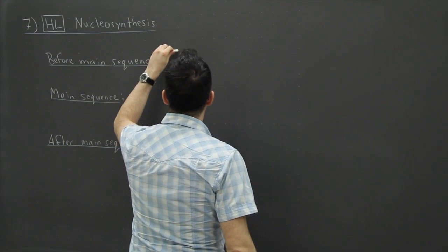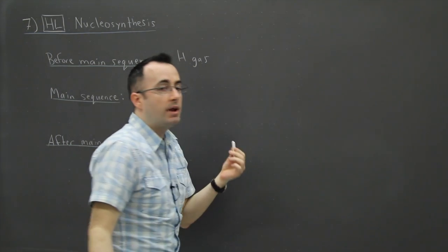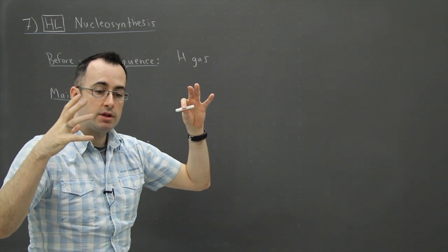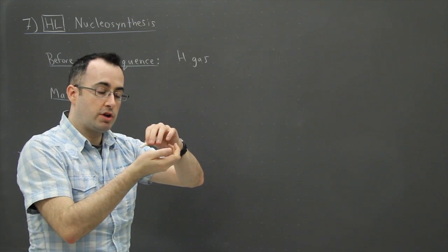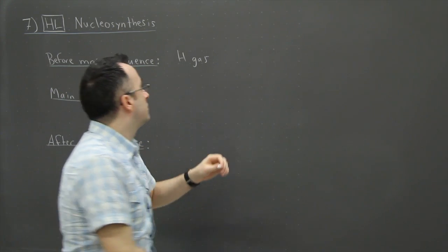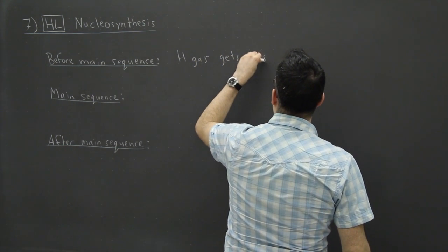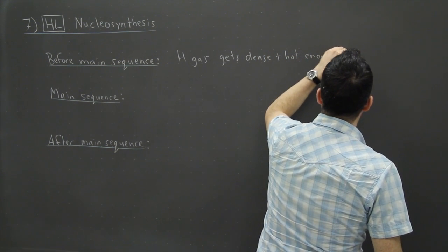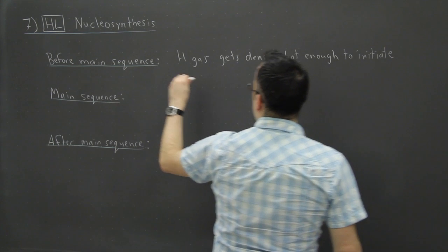So what we mainly have is a hydrogen gas, and we can say then that the hydrogen gas is just floating around in space. And if there's enough of it, the gravitational attraction between different hydrogen atoms is going to make a denser hydrogen cloud and then denser and denser. So the idea is that the hydrogen gas gets dense and hot enough to initiate fusion.